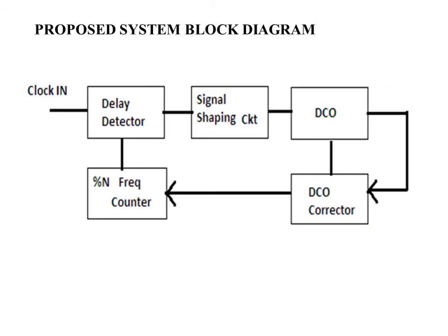This is the proposed system block diagram. Since I am using an all-digital phase-locked loop, which consists of all digital blocks, I have taken a delay detector. A delay detector takes the clock input, and from the delay detector I obtain an output which is given to the signal shaping circuit to check whether there is an error in the output wave. That output from the signal shaping circuit is given to the DCO, from the DCO to the DCO corrector, then to the divide-by-N counter, and back to the delay detector.